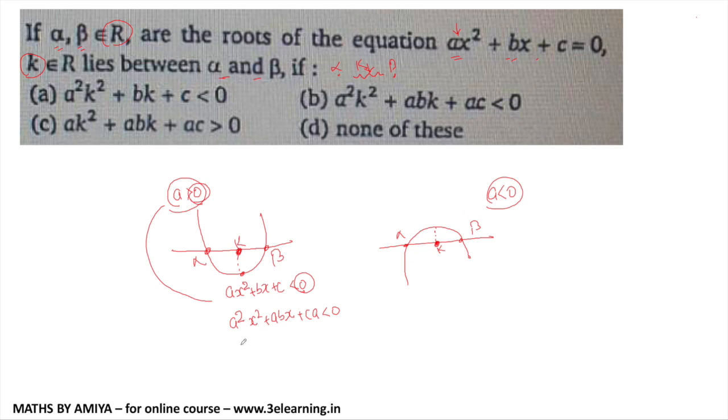if I put k here, that is a square k square plus a bk plus c a, this is negative. If I put k in this equation, we have a k square plus bk plus c, this is positive, because this one is positive,